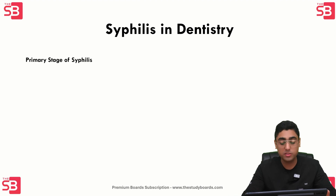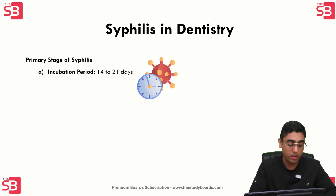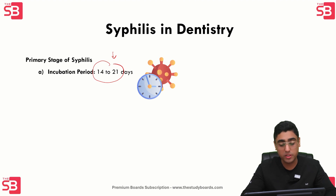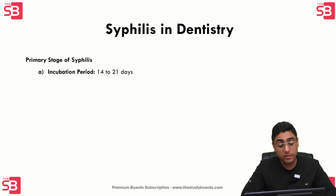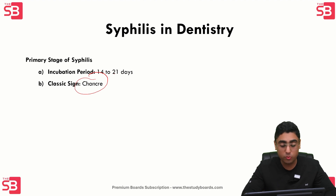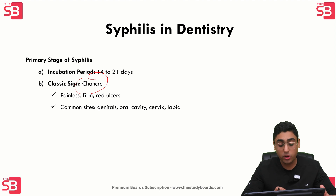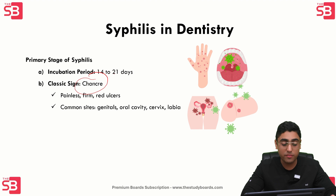In the primary stage of syphilis, the incubation period is anywhere between 14 to 21 days — they may ask this in weeks as two to three weeks or three to four weeks. The next key thing to remember is the classical sign: the presentation of chancre. The patient presents with painless, firm, red ulcers that secrete very infectious fluid. Common sites of chancre include the genitals, oral cavity, cervix, and labia.